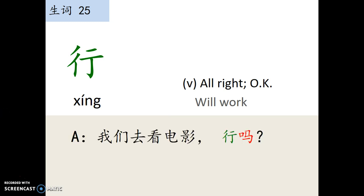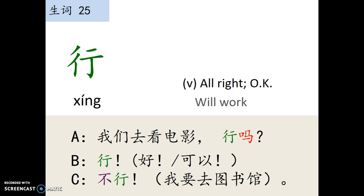我们去看电影，行吗？行。So 行 is just like 好 or 可以。不行，我要去图书馆。It doesn't work, no, I can't do it, because I'm going to the library. So 行吗 equals 可以吗。Sometimes we can also say 好吗。